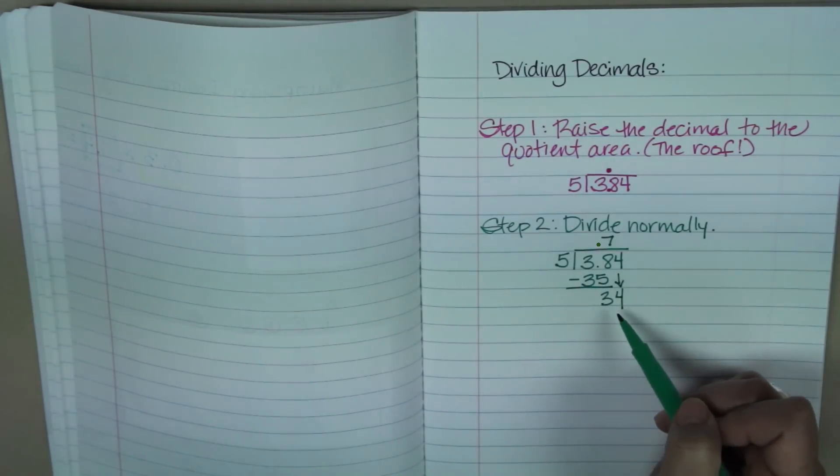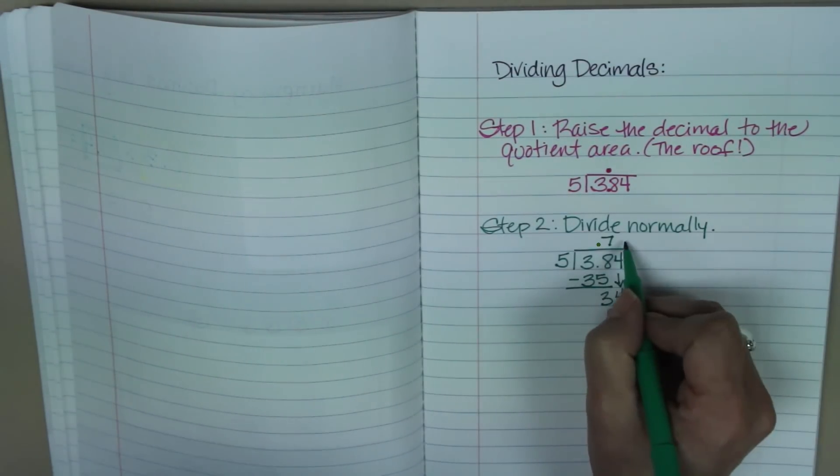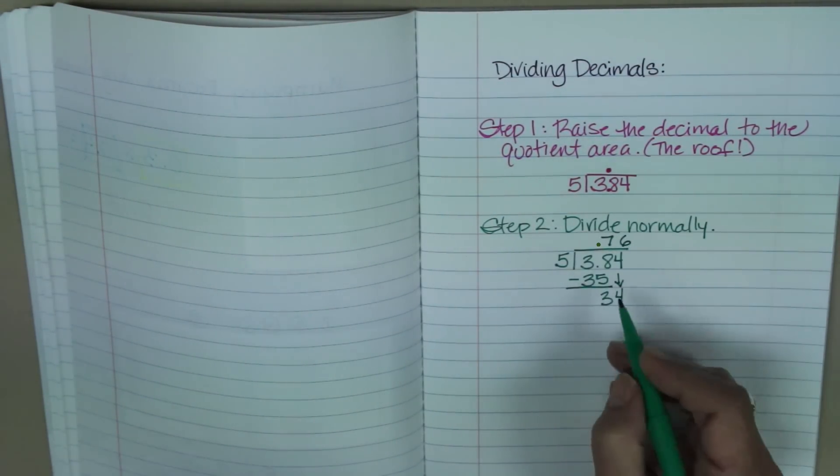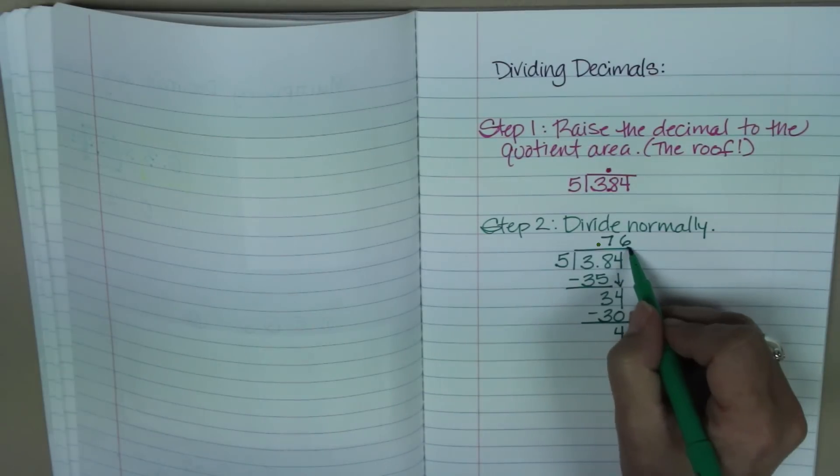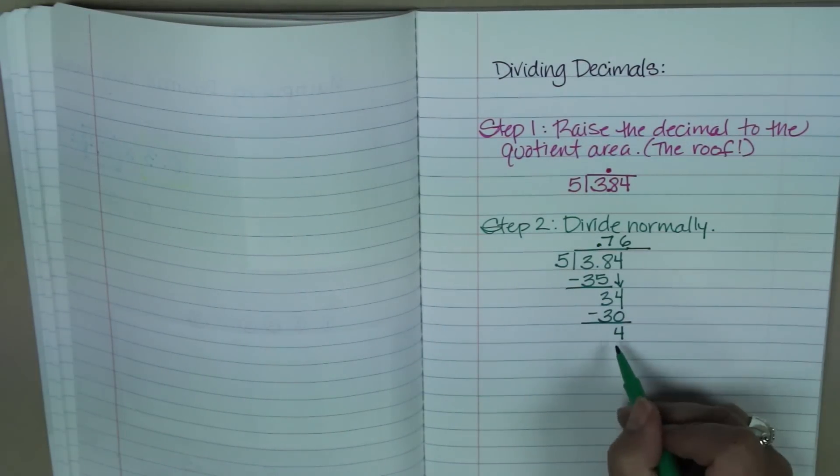And then I'm going to bring down my 4 like normal. And I also know that 5 goes into 34 six times, so 6 times 5 is 30, and now I have 4 left over. Okay, so how might I get rid of that remainder?